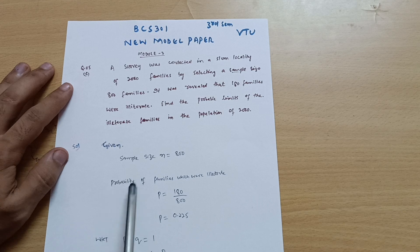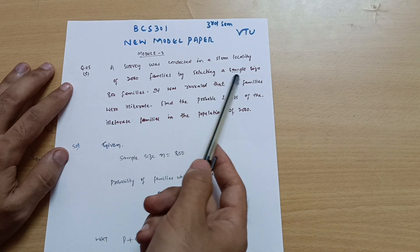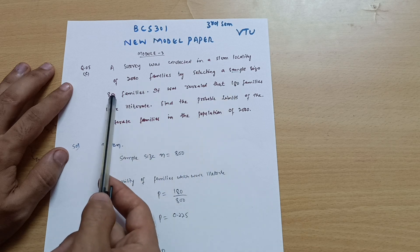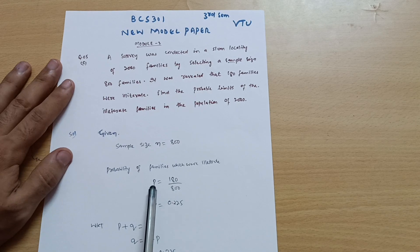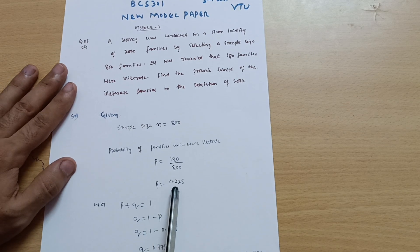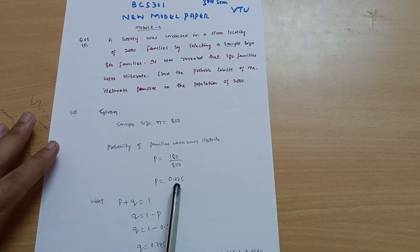Now we calculate the probability of the families which are illiterate. 180 families out of 800 are illiterate, so I can write down the probability of families which were illiterate: probability is equal to 180 upon 800, so you will get probability is equal to 0.225.